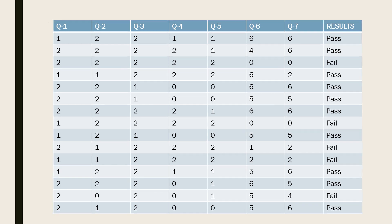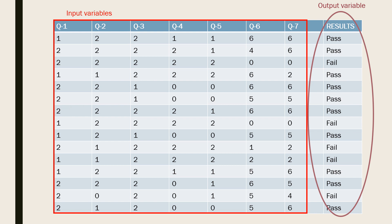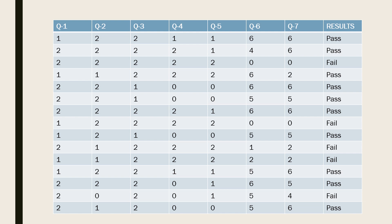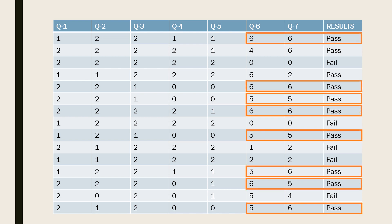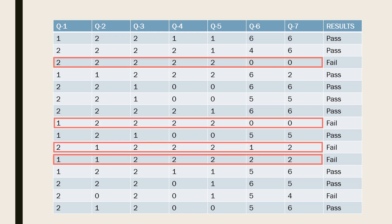Since you are interested in the results, the result column becomes your output variable and all other question columns become your input variable. Now, you try to make some observations or conclusions based on the data you have. You try to find out some relationship between your input variables and your output variable. Like, you observe that most of the students who get a score of 5 or 6 in question number 6 and 7 pass the examination. Or, some students who get full marks in 2 marks questions are not able to attempt 6 marks questions properly. This process of understanding the relationship between variables is known as inference.